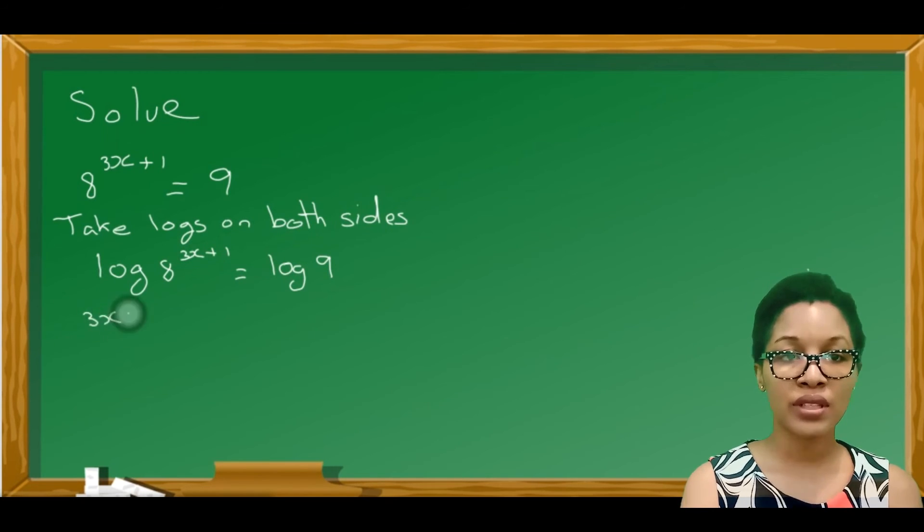We're going to use the law and put the power 3x plus 1 in front as a coefficient. So 3x plus 1 log 8 is equal to log 9.